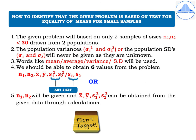To identify that a problem is based on the t-test for equality of means for small samples: first, there will be two samples of sizes N1 and N2, both less than 30, drawn from two populations. Second, the population variances σ1², σ2² or standard deviations σ1, σ2 will never be given as they are unknown. Third, words like mean, average, variance, or standard deviation will be used. Fourth, we should be able to obtain six values: N1, N2, x̄, ȳ, s1², s2² (or s1, s2) from the given data.